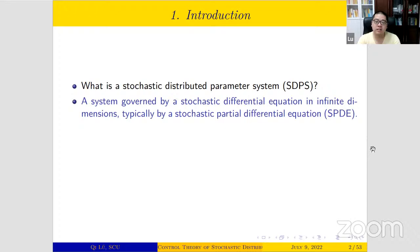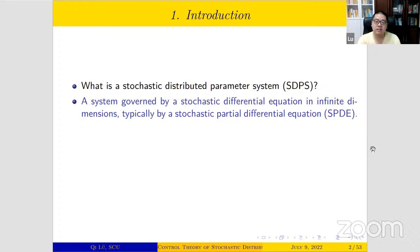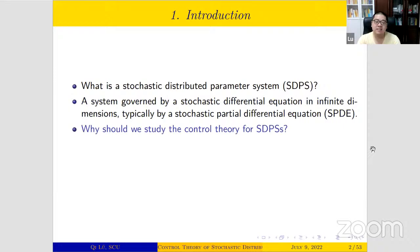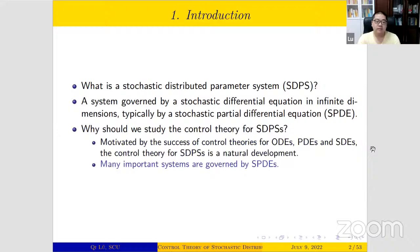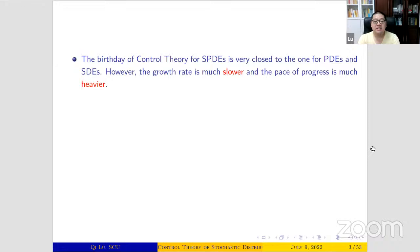Our first question is: what are stochastic distributed parameter systems? Usually, it means a system governed by a stochastic differential equation in infinite dimensions — specifically, a stochastic partial differential equation. Why should we study the control theory of such systems? There are at least two reasons. First, motivated by the success of control theories for ordinary differential equations, partial differential equations, and stochastic differential equations, control theory for stochastic distributed parameter systems is a natural development. Secondly, many important systems are governed by SPDEs, and to control them, we must study this theory. It is worth noting that the field of control theory for SPDEs is very close to the one for PDEs and SDEs, beginning at the end of the 1960s with pioneers like Wendell Fleming and Alain Bensoussan.